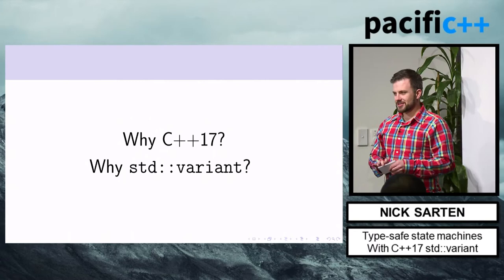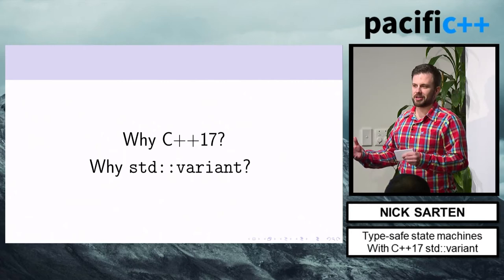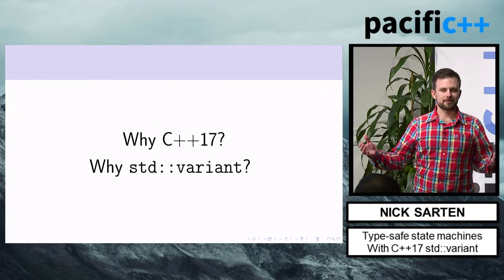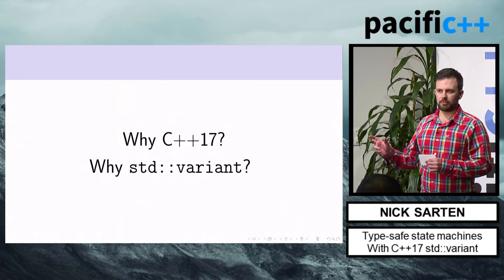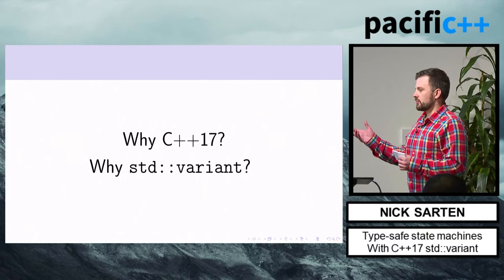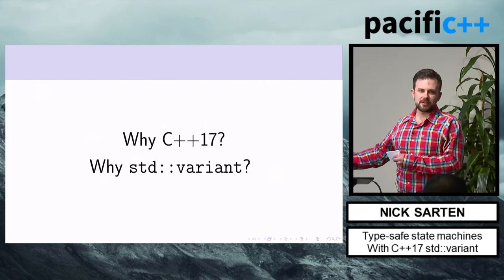A lot of the criticism online is that C++17 isn't substantial enough — what do you actually get for all the trouble of upgrading your compiler? People say it doesn't have ranges, modules, or concepts — those are the three headline features that were supposed to make it in but didn't. Concepts has been confirmed for C++21, and modules are still in progress. But despite not having those features, C++17 still has significant benefits, one of which is std::variant.